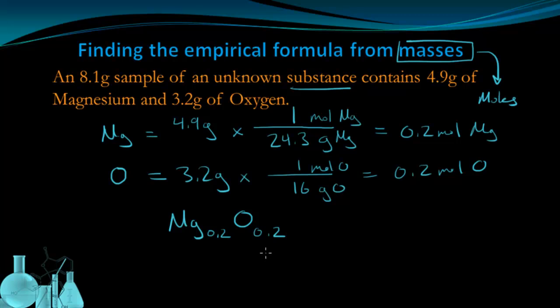Just like last time, I can divide by the smallest subscript. It just so happens that they're the same, 0.2 and 0.2. So I already know that these combine in a 1 to 1 ratio and form MgO as the empirical formula. But I can still do the same process of dividing each of these by 0.2 just to make sure. 0.2 divided by 0.2 gives me 1. This also drops out and gives me 1, so it's just MgO.